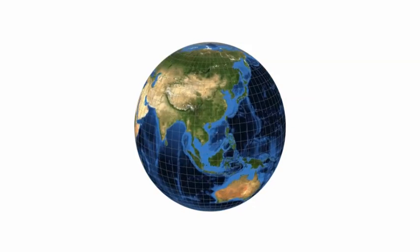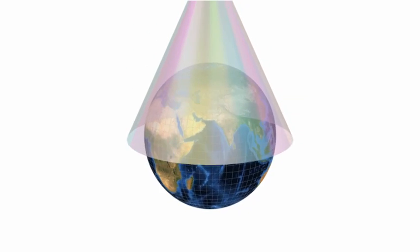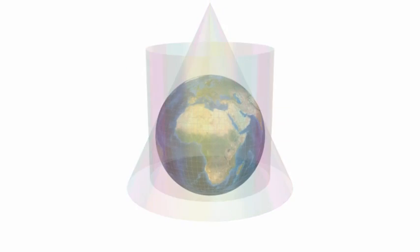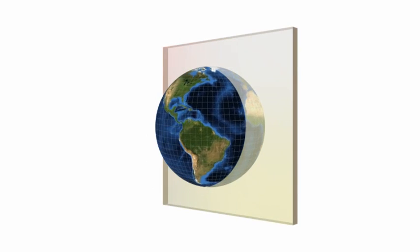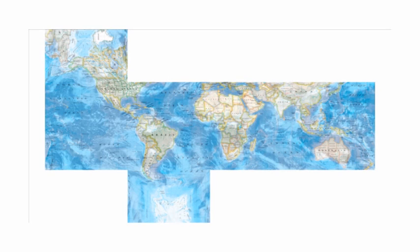Features of the 3D Earth are projected onto different shapes, such as cones, cylinders, even flat surfaces or planes, or other shapes.